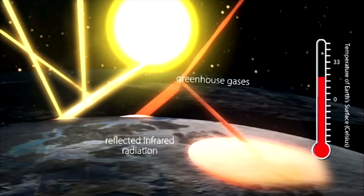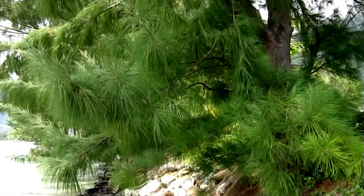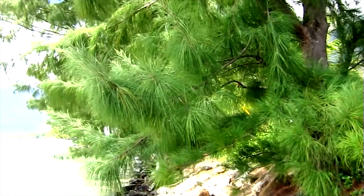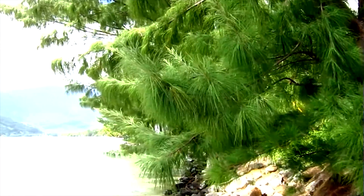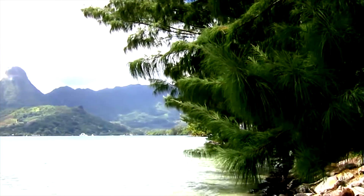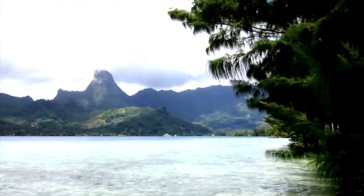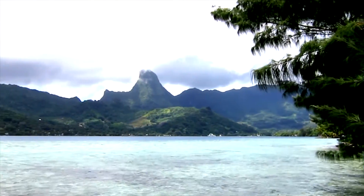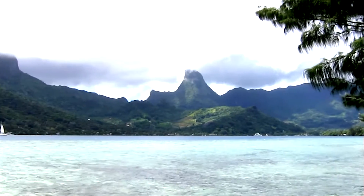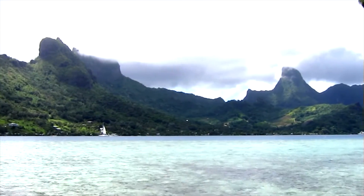With more carbon dioxide in the air, the Earth's surface is warming. Fortunately, there are some natural processes which help regulate carbon dioxide levels. Terrestrial processes, like plant photosynthesis, take carbon out of the atmosphere.